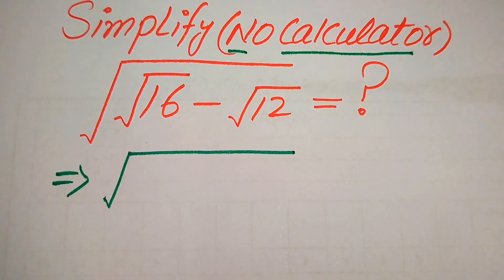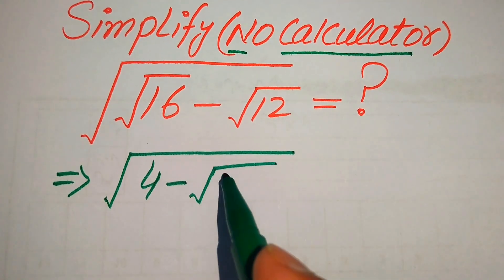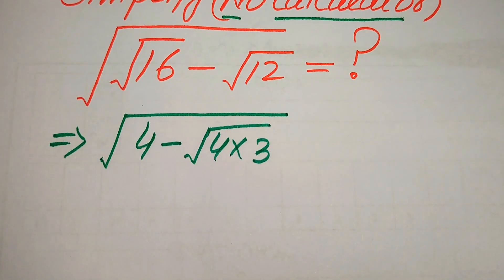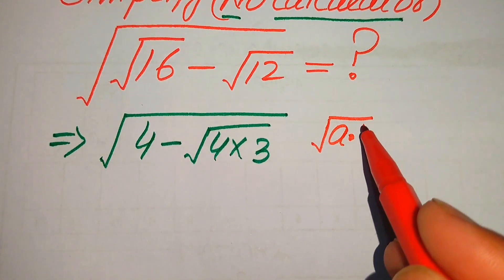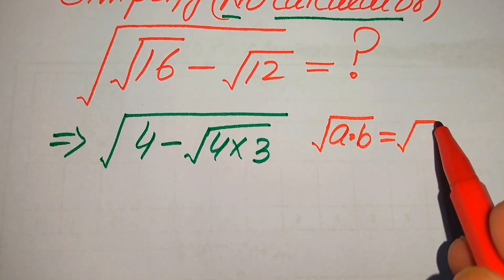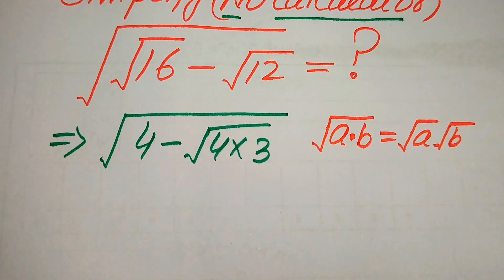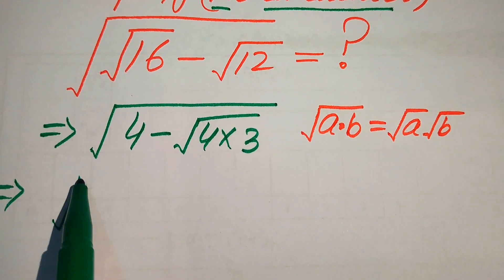The square root of 16 equals 4. Next, we break 12 as 4 multiplied by 3. Then we focus inside the square root sign again and apply the radical law: the square root of a·b equals the square root of a times the square root of b.